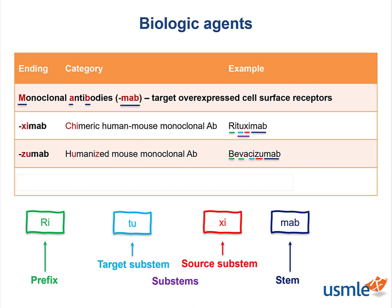The next example, denosumab, is a 'mab', or monoclonal antibody, with 'U' as the source substem, signifying human, and 'OS' as the target substem, which means bone.